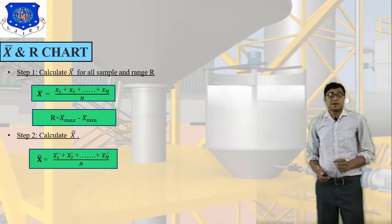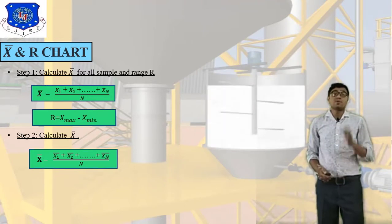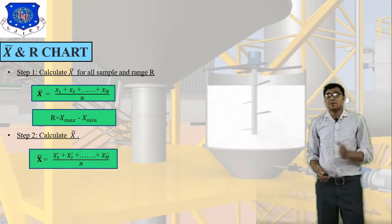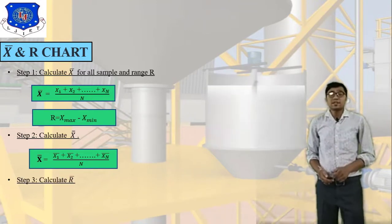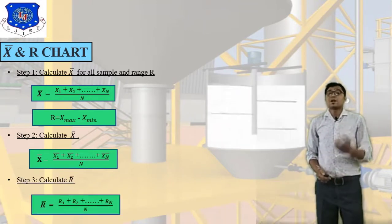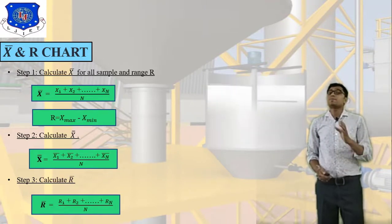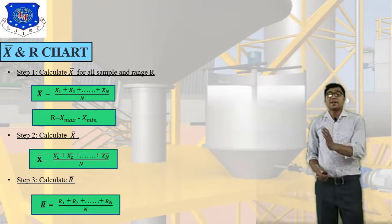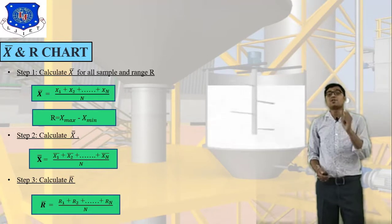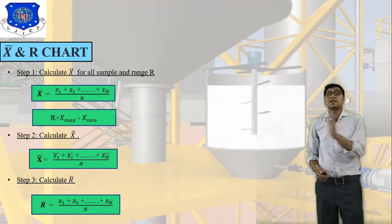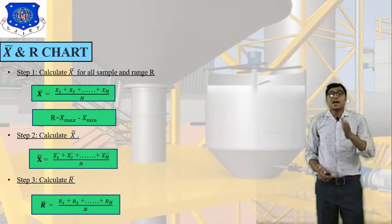Step 2: calculate X double bar. X double bar is equal to (X1-bar + X2-bar + X3-bar + ... + XN-bar) divided by n. Step 3: calculate R-bar. R-bar is equal to (R1 + R2 + R3 + ... + Rn) divided by n — you need to find the range mean value.